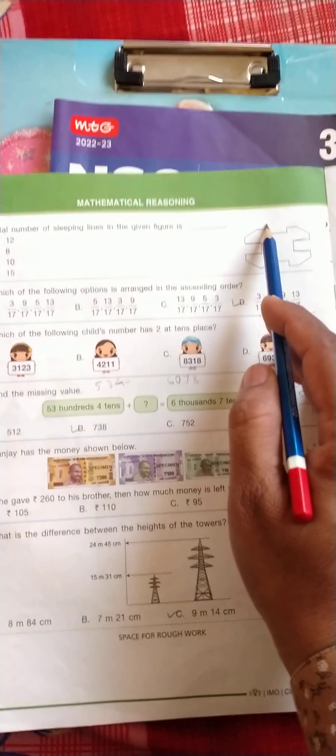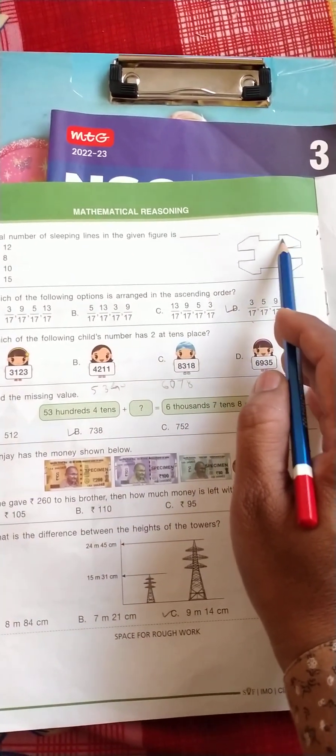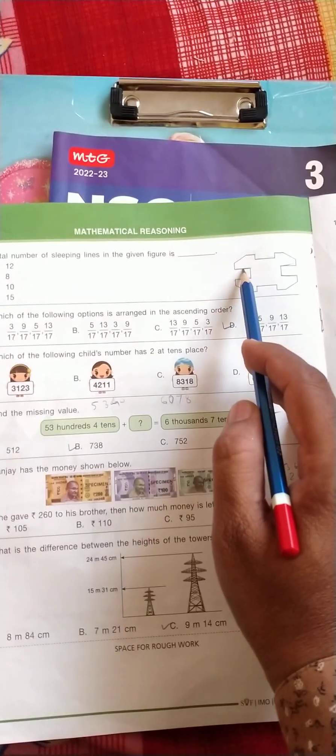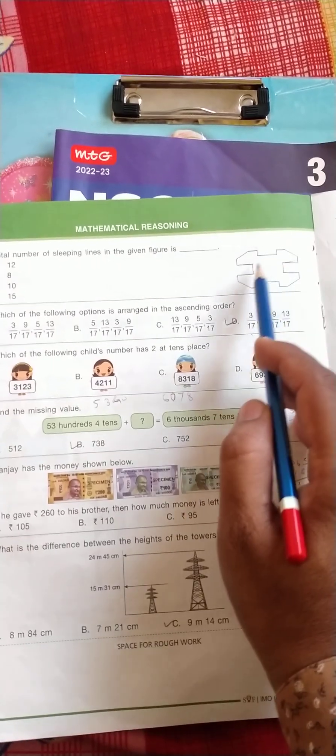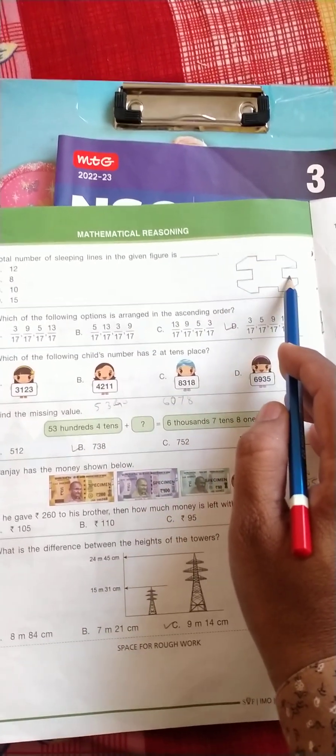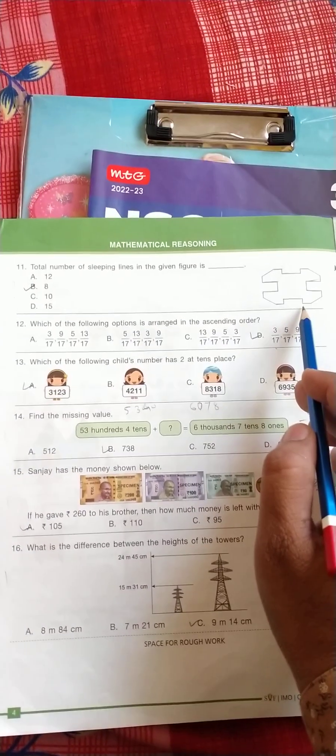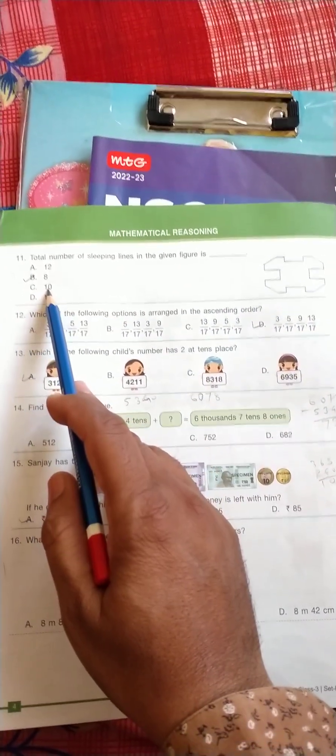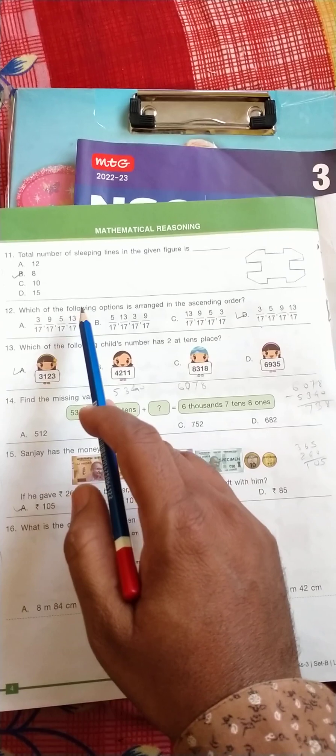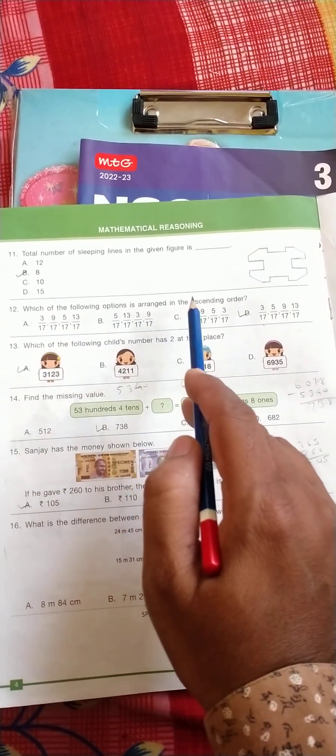So the sleeping line is here 1, 2, 3, 4, 5, 6, 7, 8, 9, 10. So the correct answer is C, 10. Which of the following option is arranged in the ascending order? So the correct option is D because it's 3, 5, 9, and 13 are in ascending order.